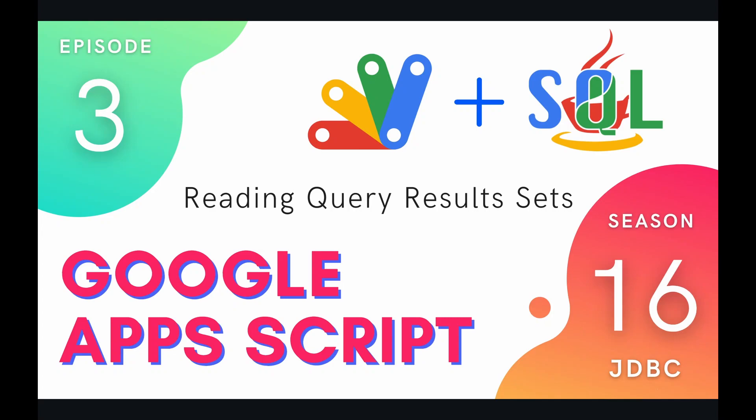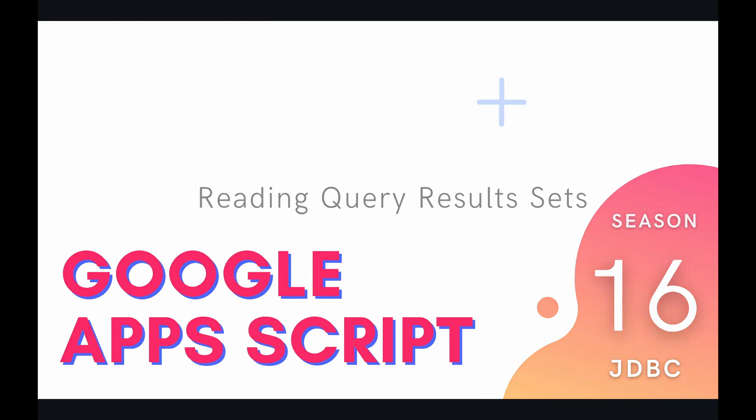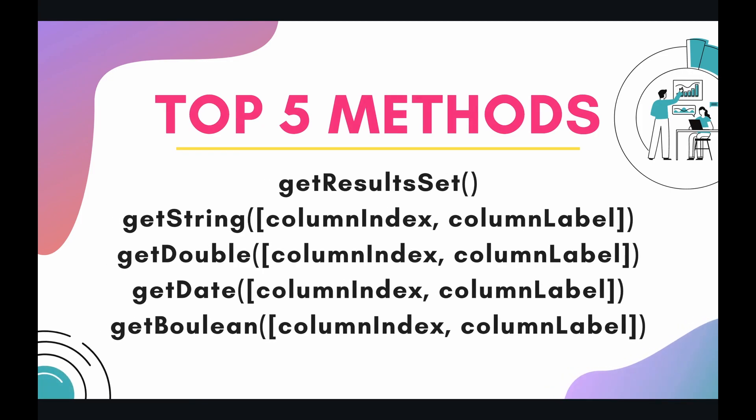Hey coders, welcome to episode three of our JDBC service playlist on the Google Apps Script course. In today's episode, we're going to be learning how to read our query result sets. From our last episode, we learned that result sets are what is returned to us when we make a query to a database. A query is defined as a read operation, so when you ask the database for some data, it returns that data in a result set object. Now in this episode, we're going to learn how to unpack that object to get the actual data.